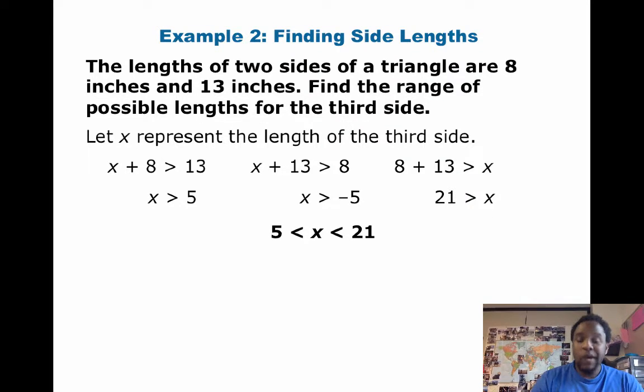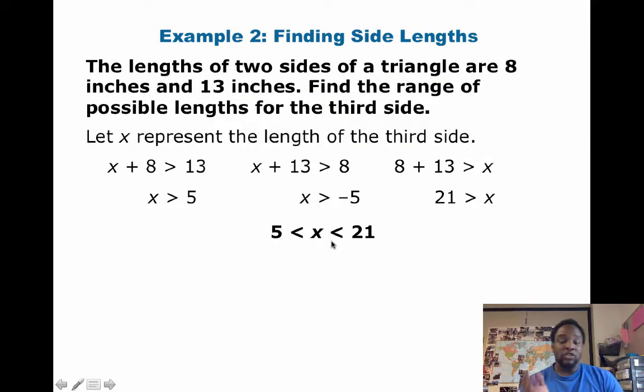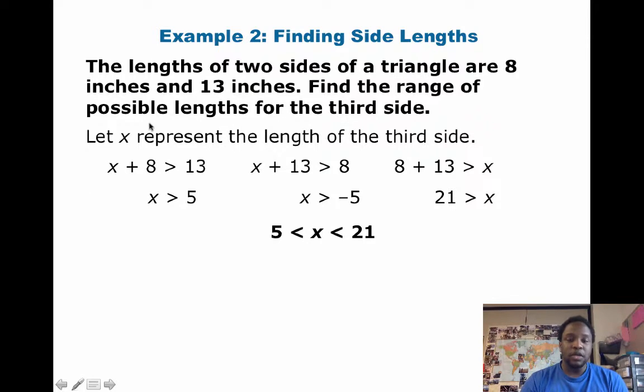So, we get that x is between 5 and 21. So, if we know that we have a triangle with side lengths 8 and 13, we then know that at least that it's going to be somewhere in between 5 and 21. So, with this first column, 13 was the longest side. And in this third column, 13 was the second longest side.